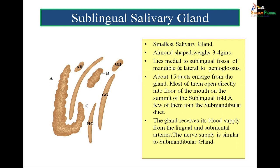The sublingual salivary gland is the smallest salivary gland. It is almond-shaped, marked by B in the figure, and weighs around 3 to 4 grams. It lies medial to the sublingual fossa of the mandible and lateral to the genioglossus muscle. It has around 15 ducts which emerge from the gland; most open directly into the floor of the mouth on the summit of the sublingual fold, while a few join the submandibular duct. This gland receives its blood supply from the lingual and submandibular arteries, and its nerve supply is similar to that of the submandibular salivary gland.